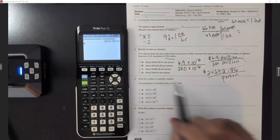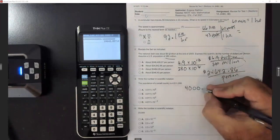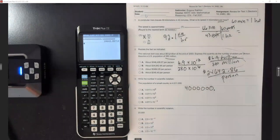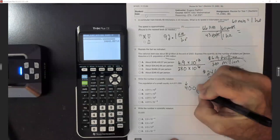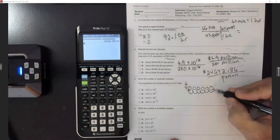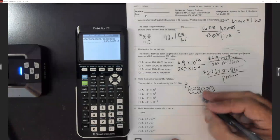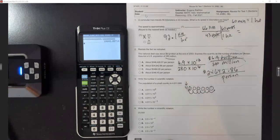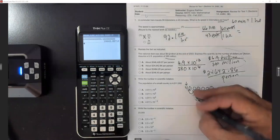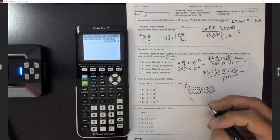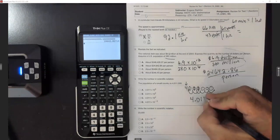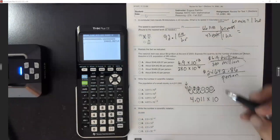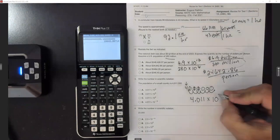Write the number in scientific notation — we're starting with 4,011,000. The decimal is at the end, so to write in scientific notation, the first non-zero number is 4, so we move the decimal behind that 4. It took six moves to the left, which makes the exponent positive. We rewrite this as 4.011 times 10 to the positive 6.